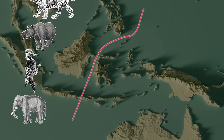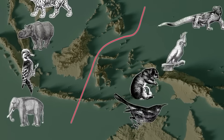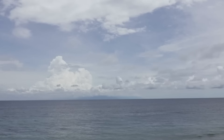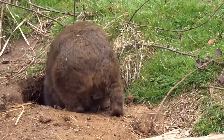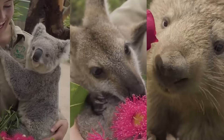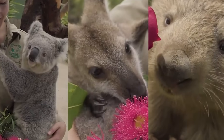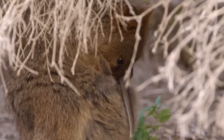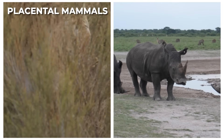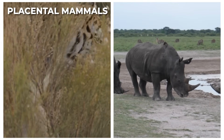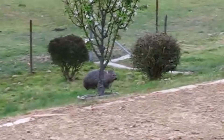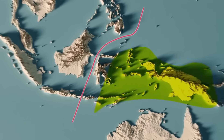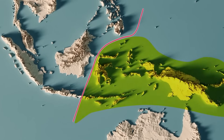The Wallace Line essentially marks the boundary between these two distinct animal groups, resulting in a remarkable contrast between the ecosystems on either side. One of the most striking examples is the presence of marsupials — kangaroos, koalas, and wombats — on the Australian side, and their complete absence on the Southeast Asian side, where placental mammals like tigers and rhinos dominate. Why are there no marsupials in Asia? Because their ancestors evolved on the isolated continent of Australia, and after the Wallace Line formed, the animals were unable to cross.